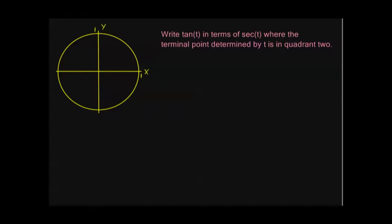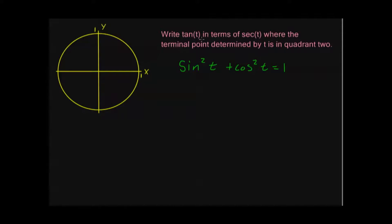This next problem is one that a lot of students have trouble with — and very understandably so. It says: write tangent of t in terms of secant t, where the terminal point determined by t is in quadrant 2. When we see tangent and secant together, we should immediately think of the Pythagorean identity containing tangent and secant. Remember, there are three Pythagorean identities: one with sine and cosine, one with tangent and secant, and one with cotangent and cosecant.